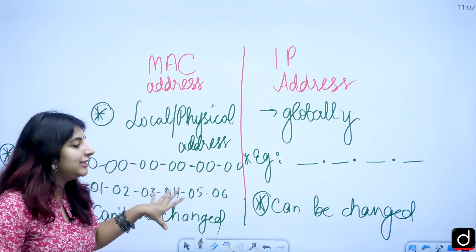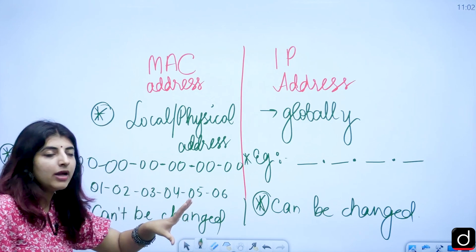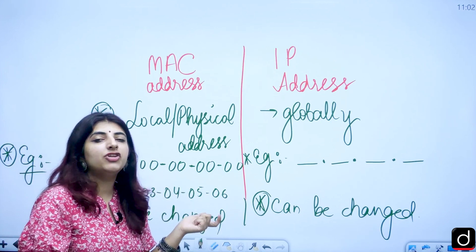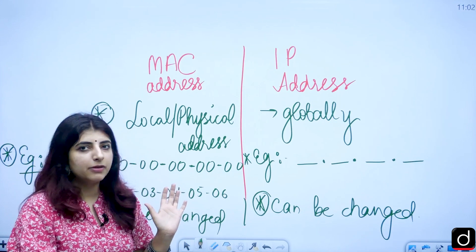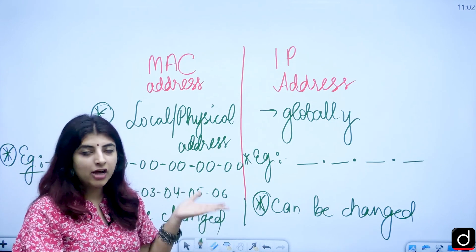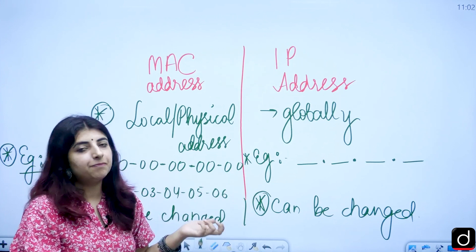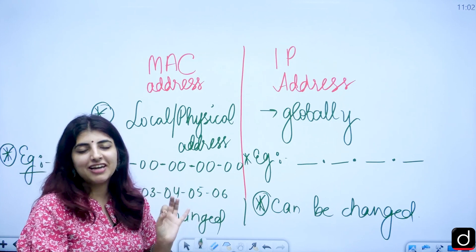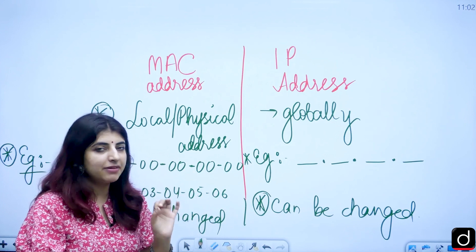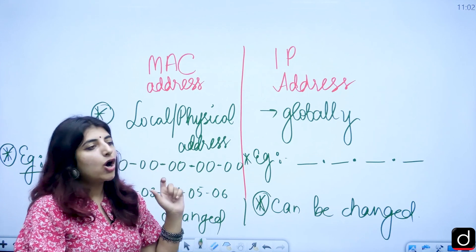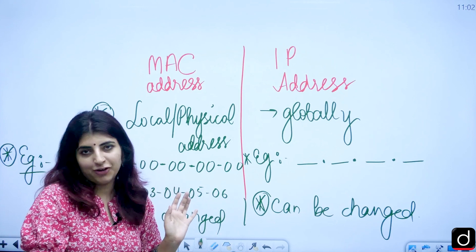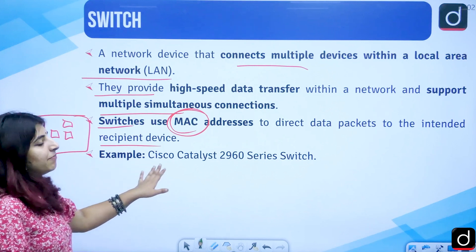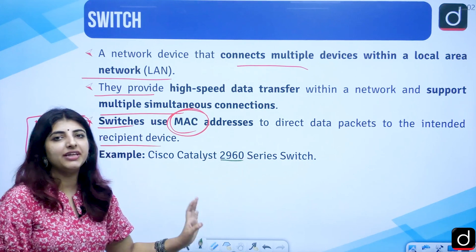These are important differentiations to know and note down because when dealing with network devices, certain terminologies are inevitable. You need to be confident and clear in your mind about what data packets, MAC addresses, and IP addresses mean, so that when these terms appear in an exam, you know what they refer to. An example of a switch is the Cisco Catalyst 2960 series switch.